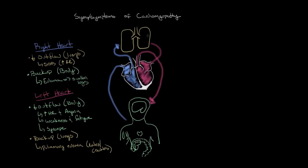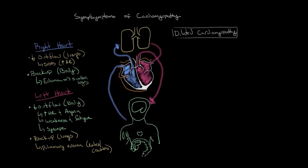There are three specific types of cardiomyopathy that I want to mention briefly, because they each have some characteristic signs and symptoms of their own. The first is known as dilated cardiomyopathy. In dilated cardiomyopathy, the chambers of the heart get really big, the muscle of the heart wall gets really thin, and it's not able to pump blood quite as efficiently — so you get this failure of the heart muscle.